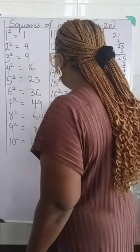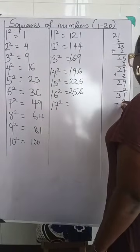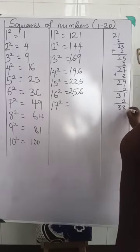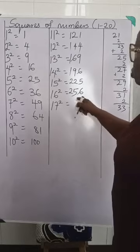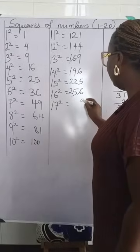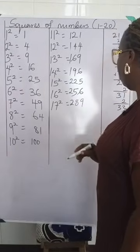Now we have 17 squared. 17 squared is plus 2 here. We'll have 31 plus 2, which is 33. 33, you add it to 256. 3 plus 6 is 9. 3 plus 5 is 8. And you bring down your 2 here.